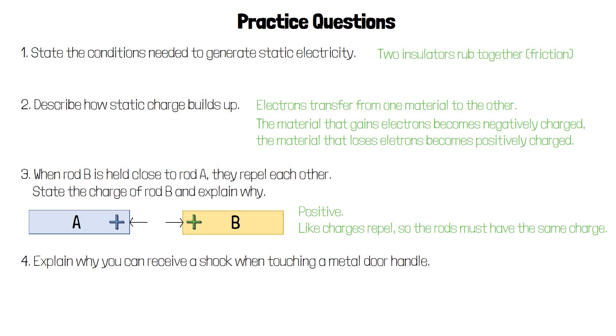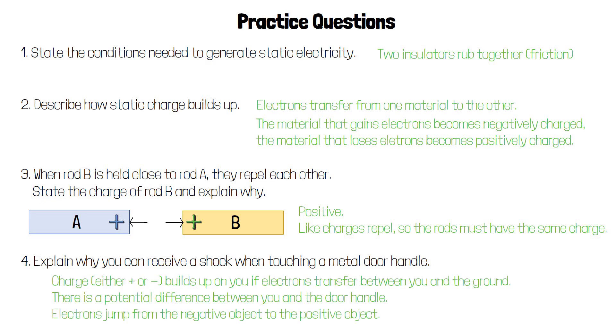You can get a static shock when you touch a metal door handle, because charge builds up on you, either positive or negative, when electrons transfer between you and the ground. That creates a potential difference between you and the door handle, so electrons will jump from the negative object to the positive object, causing a current to flow.